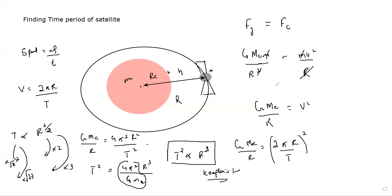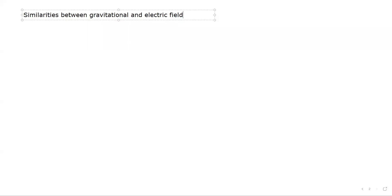Now the similarities and differences between the gravitational field and the electric field. First, they both have infinite range — you cannot limit the gravitational field to a specific distance. The field strength varies with the inverse square law: as distance increases, intensity decreases. So the first similarity is both have infinite range, and the second is both follow the inverse square law.